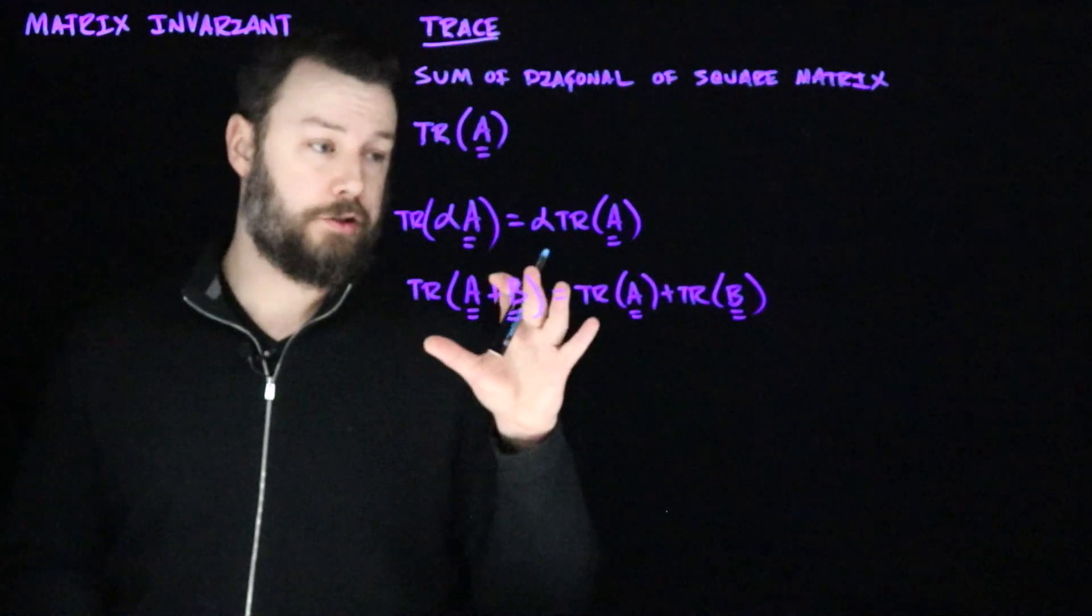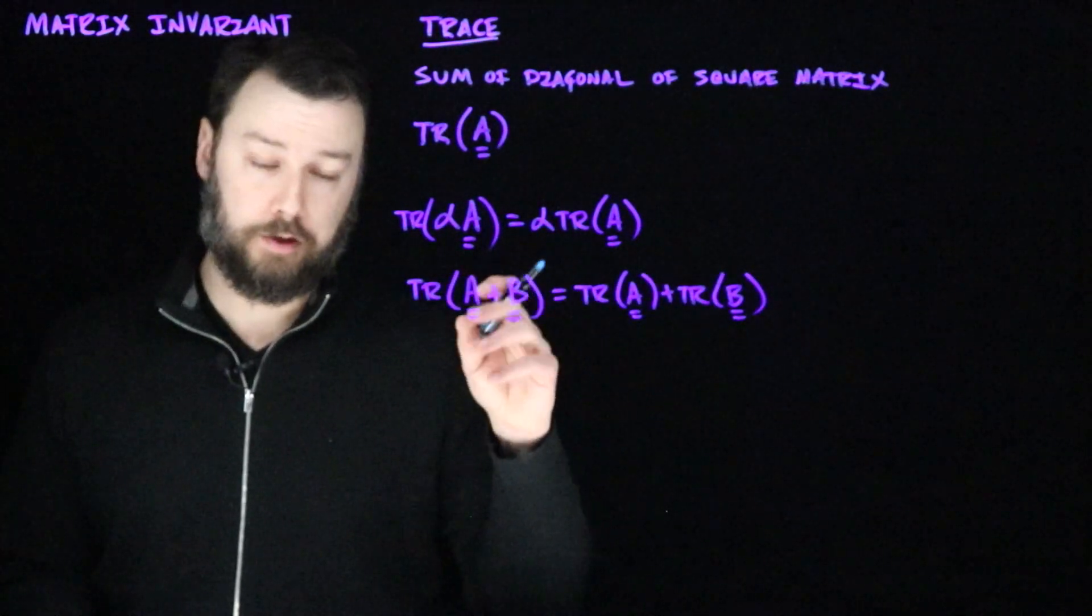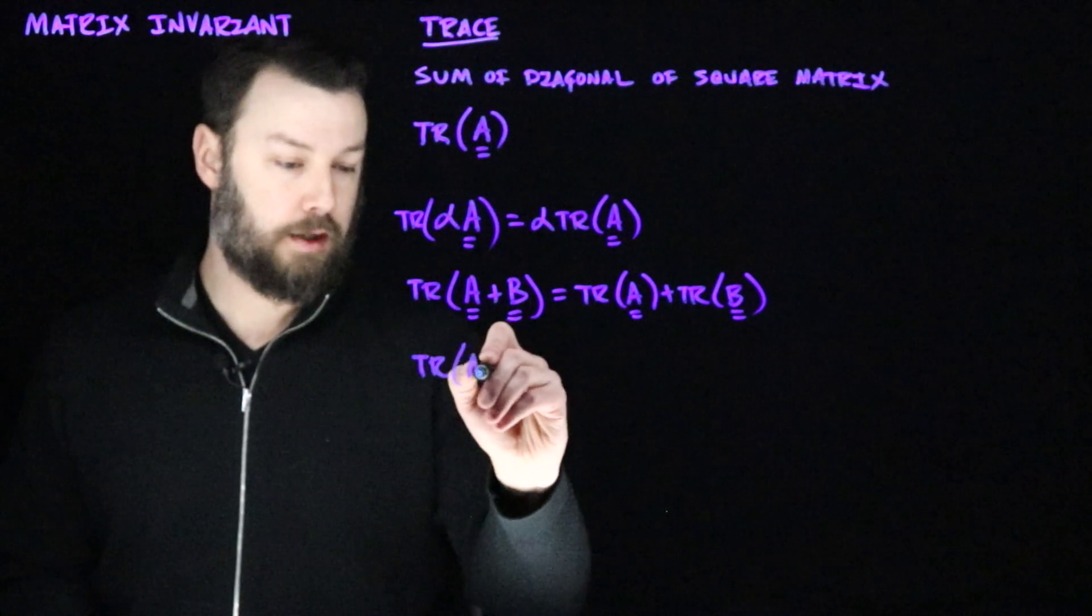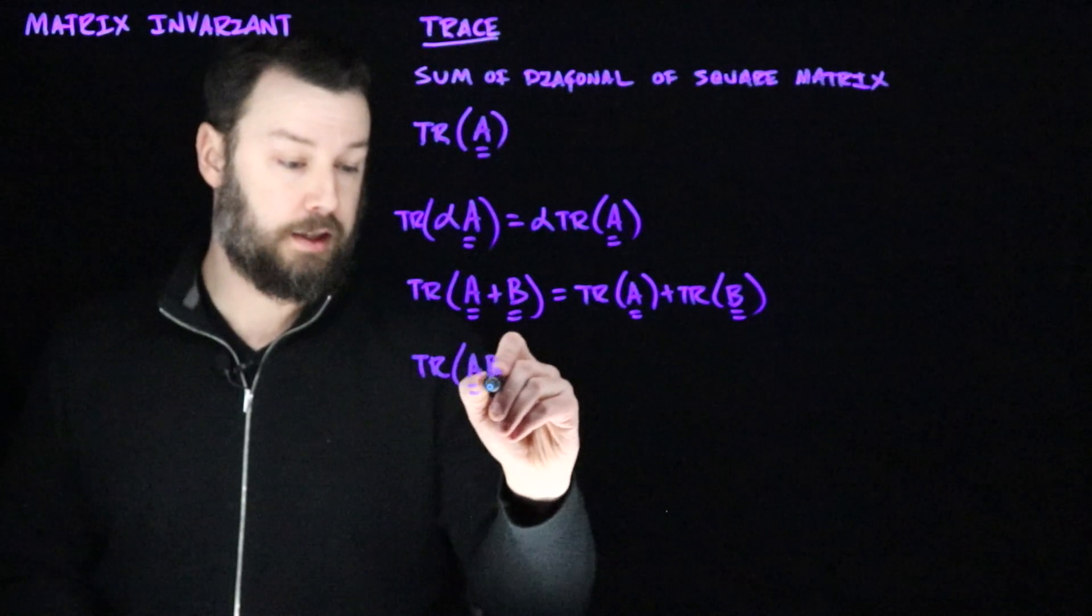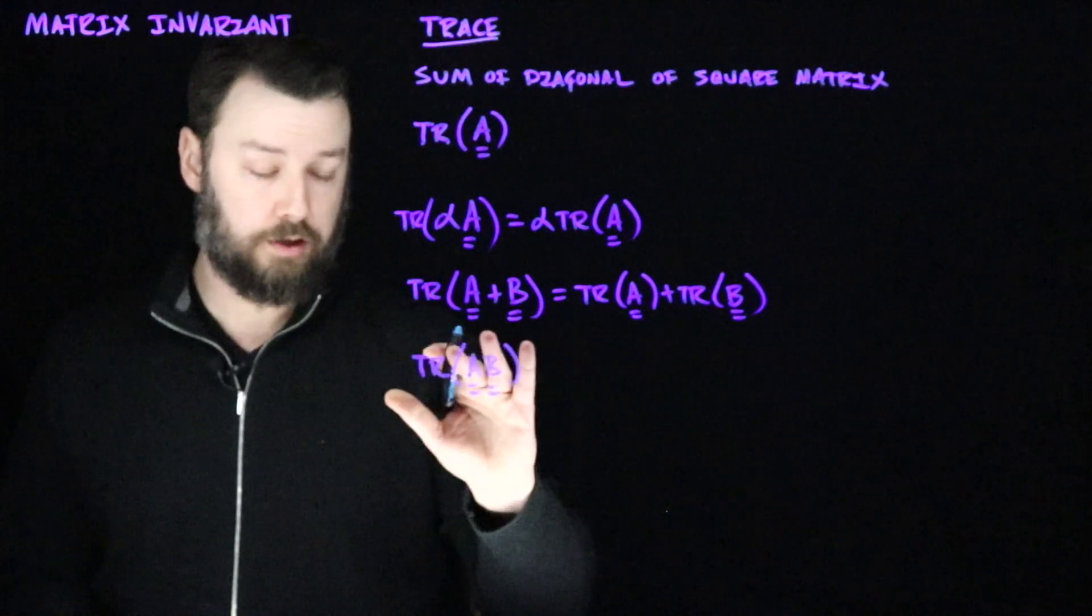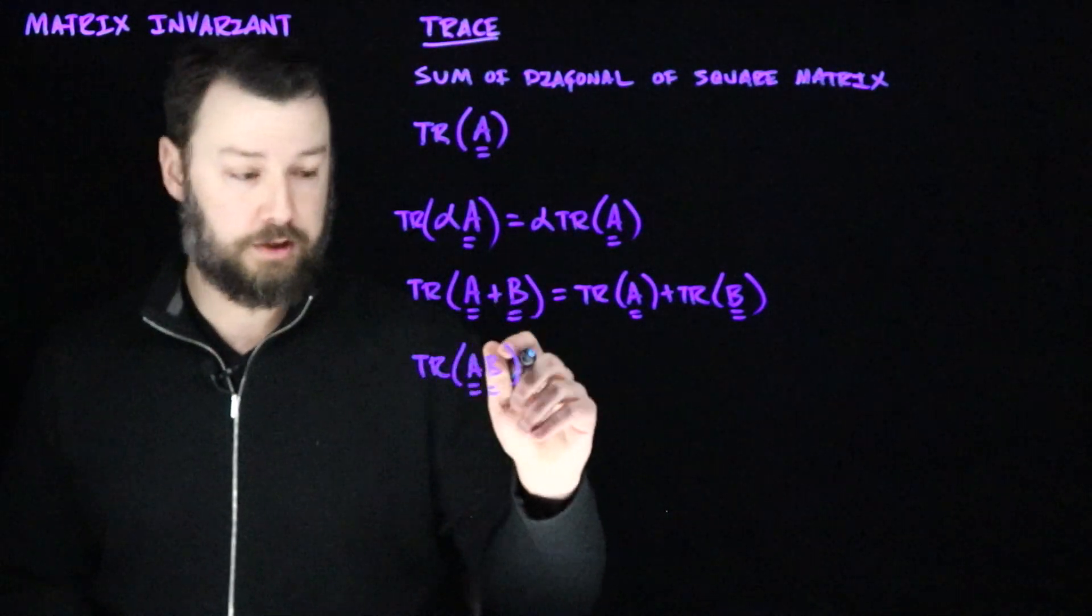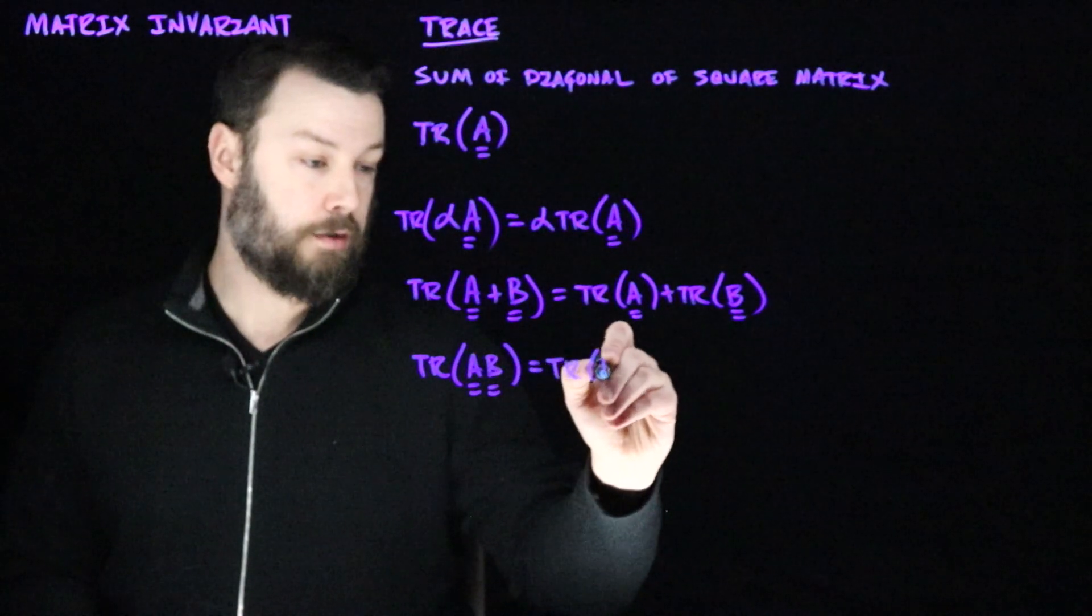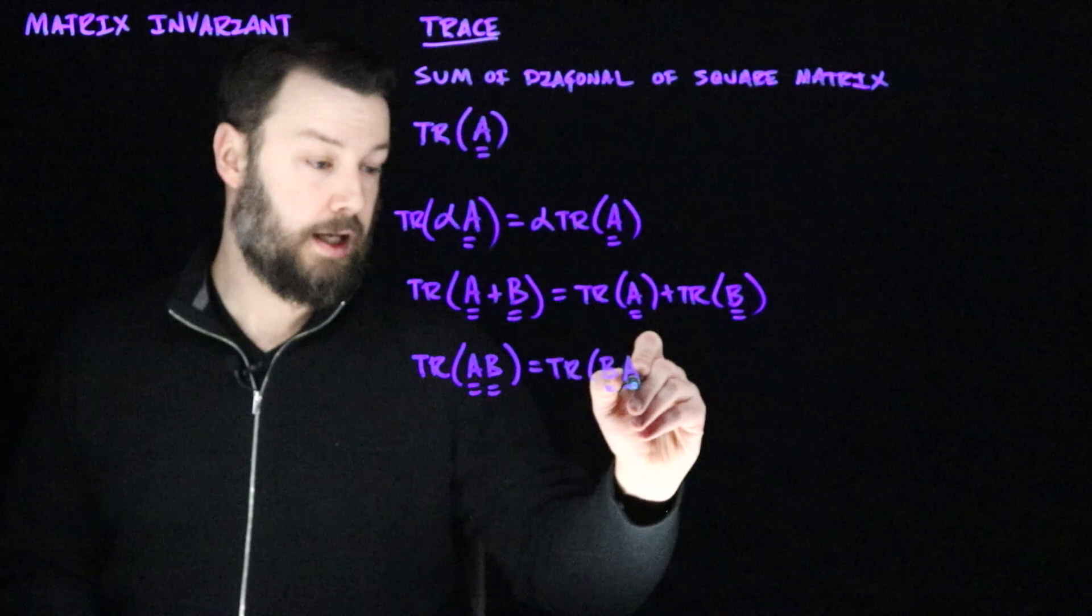Another important thing is that trace exhibits a certain kind of commutativity of its arguments. That is to say that the trace of A multiplied by B, again assuming I should say that A and B are dimensionally compatible, is equal to the trace of B multiplied by A.